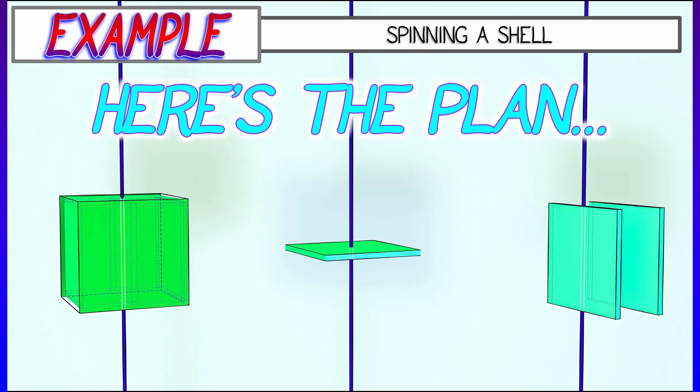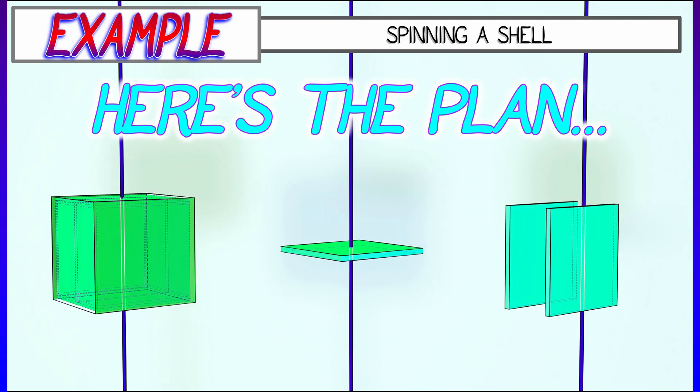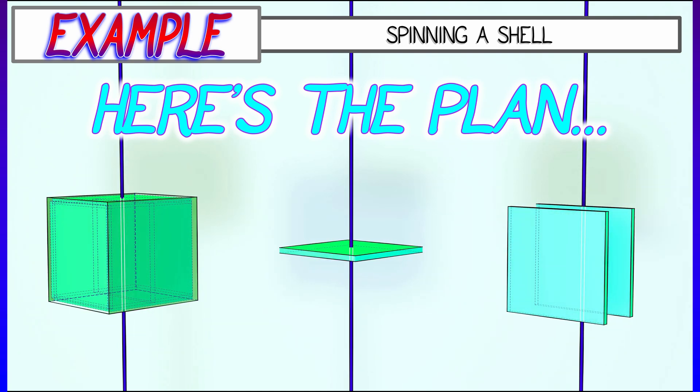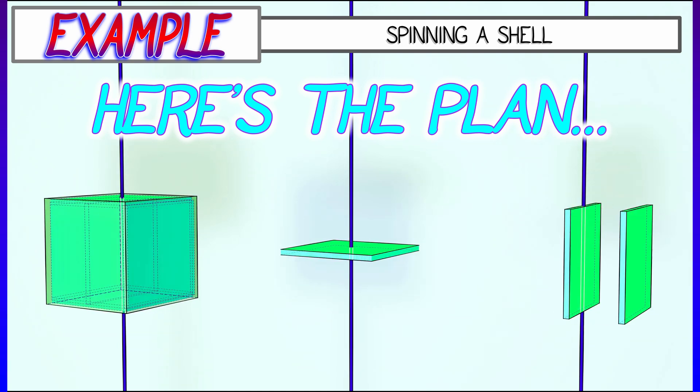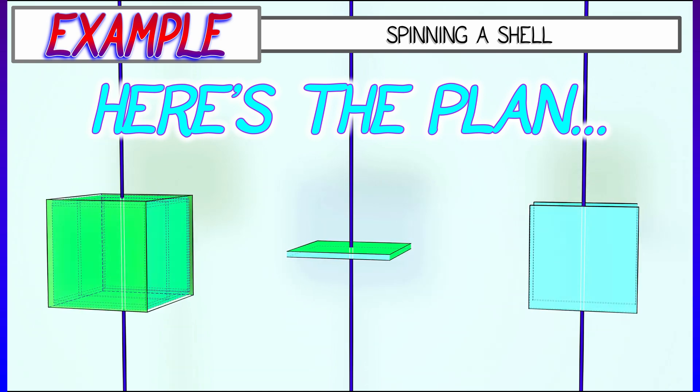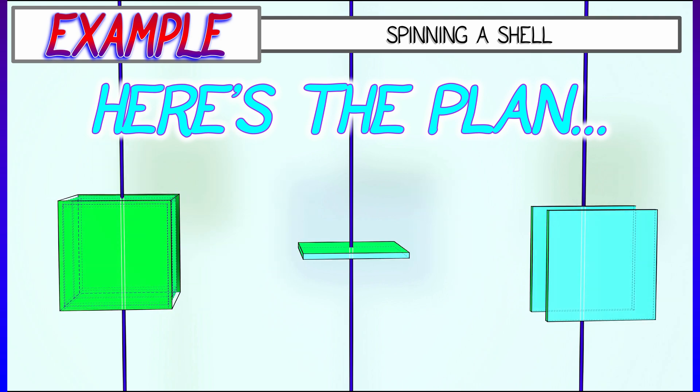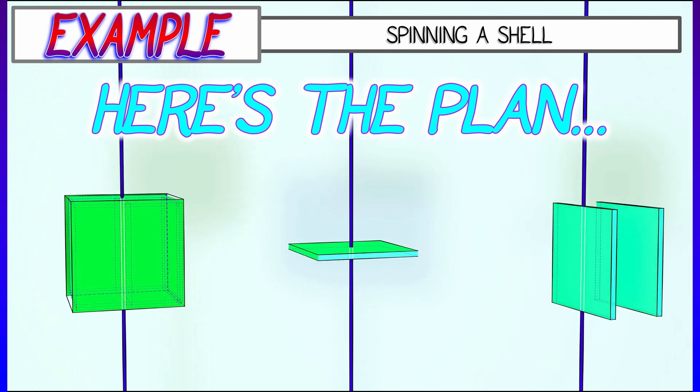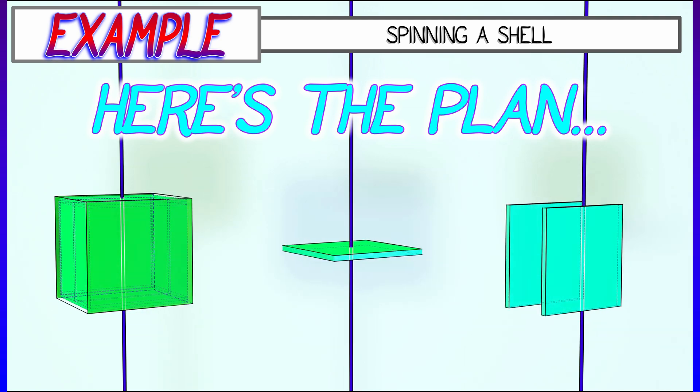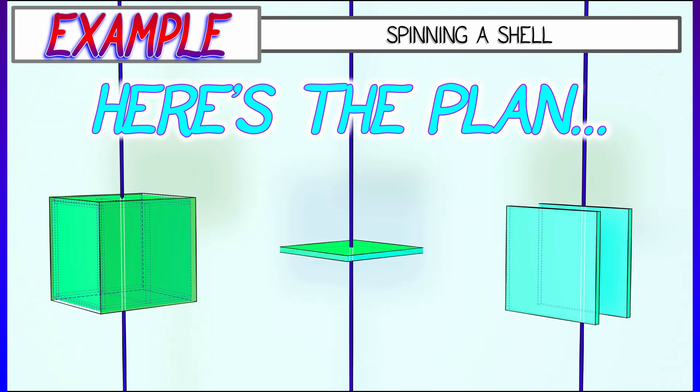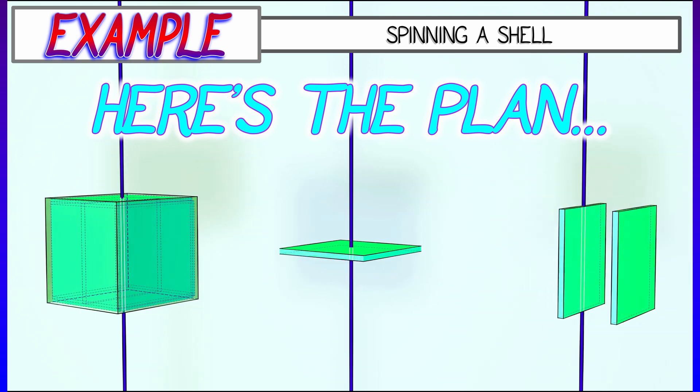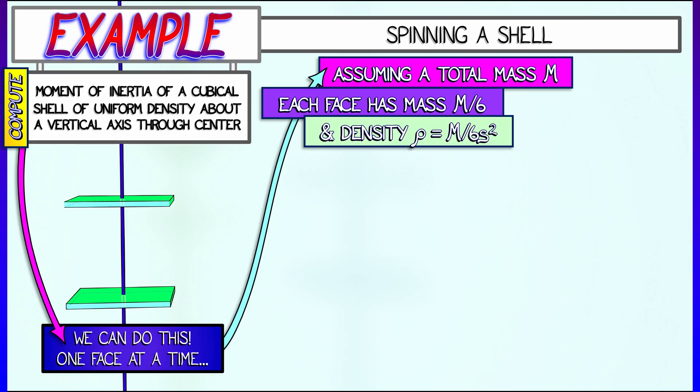But then we're also going to do the four side plates, which are different. We're going to think about rotating a square plate about a central vertical axis, compute the moment of inertia of that, and then use the parallel axis theorem to translate that out a distance of s over 2.